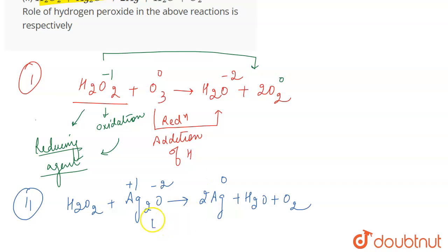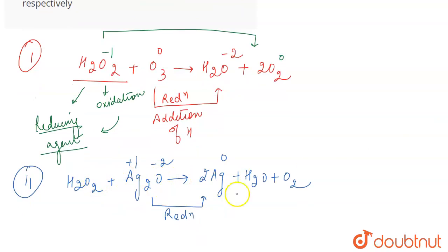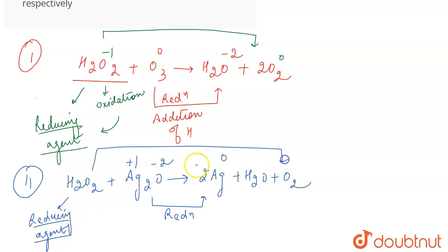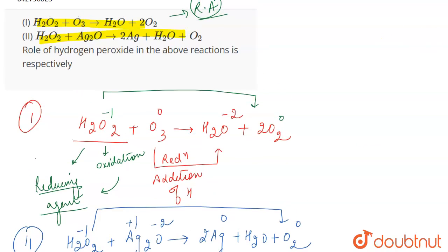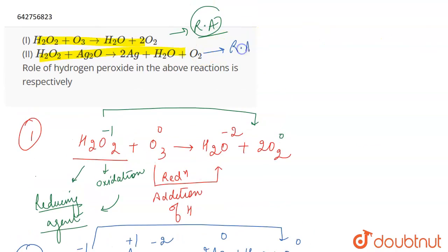Reduction is taking place because the oxidation number of silver is decreasing. Since H₂O₂ is helping Ag₂O undergo reduction, it acts as a reducing agent. Additionally, H₂O₂ is itself getting oxidized — oxygen goes from minus 1 in H₂O₂ to 0 in O₂ — so it undergoes oxidation. Therefore, hydrogen peroxide acts as a reducing agent in both reactions.